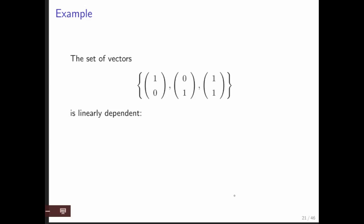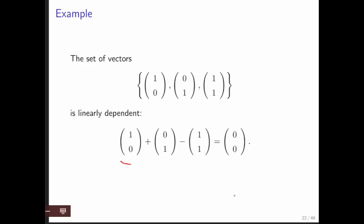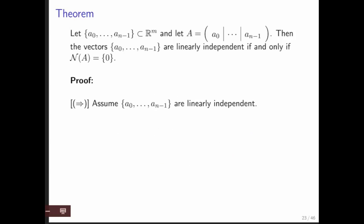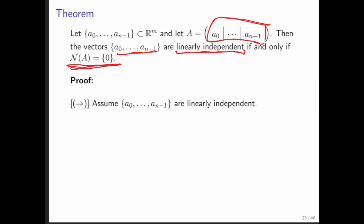This set of vectors is linearly dependent because the third vector can be written as a linear combination of the first two. More generally, we can take a linear combination of those vectors and generate the zero vector. Sometimes we take those vectors and make them into the columns of a matrix. The theorem says that vectors a₀ through aₙ₋₁ are linearly independent if and only if the matrix formed by those columns has only the zero vector in its null space.